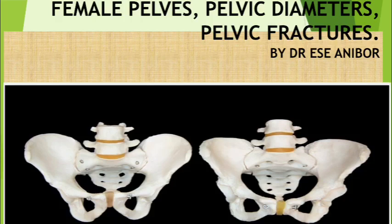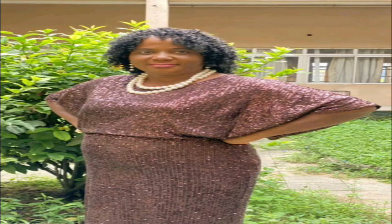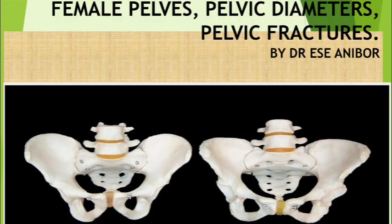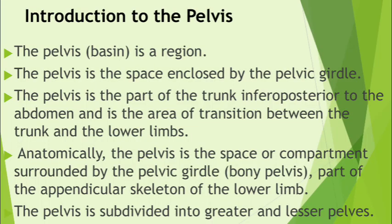Welcome once more to this YouTube channel. Kindly subscribe. The topic is the pelvis — we are looking at the pelvic girdle, male and female pelvises, pelvic diameters, and pelvic fractures. By way of introduction, the pelvis is a region in the body: the space enclosed by the pelvic girdle. It is the part of the trunk inferior and posterior to the abdomen, and is the area of transition between the trunk and the lower limbs.